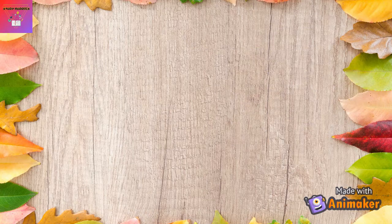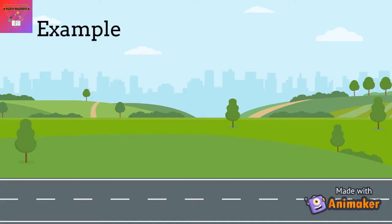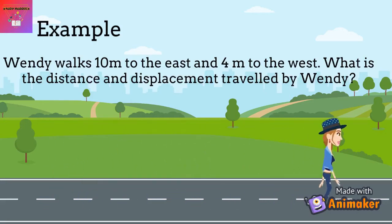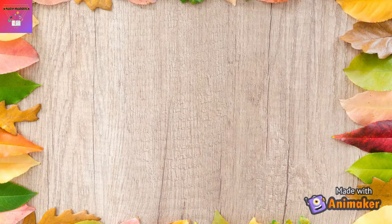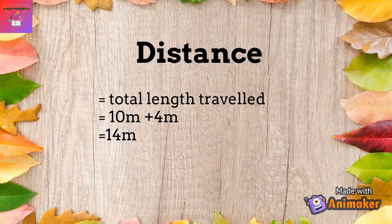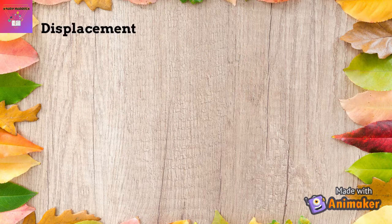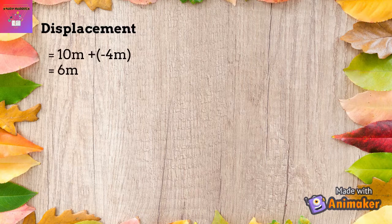Let's try a sample question to understand distance and displacement better. Wendy walks 10m to the east and 4m to the west. What is the displacement and distance travelled by Wendy? Distance is the total length travelled, so 10m plus 4m equals 14m. As for displacement, consider east as positive and west as negative, so positive 10m plus negative 4m equals 6m.